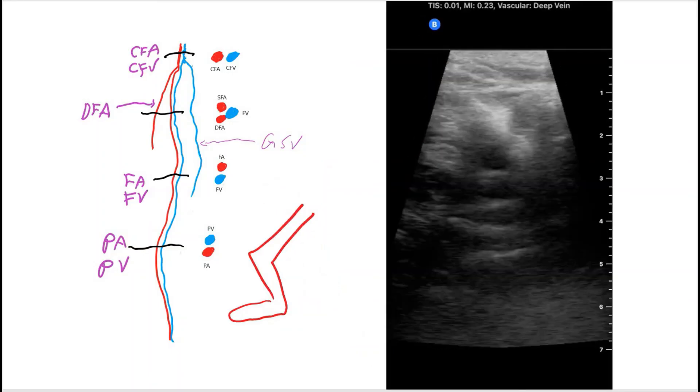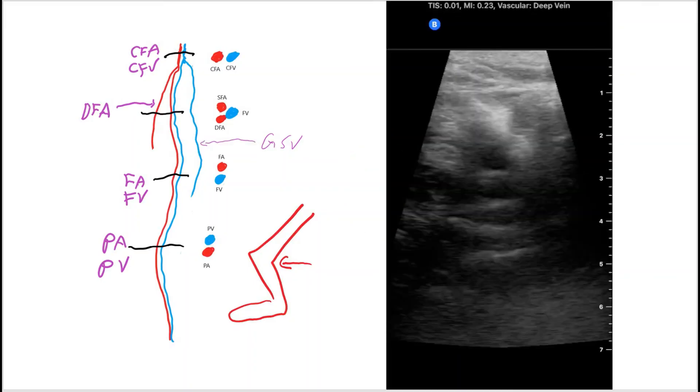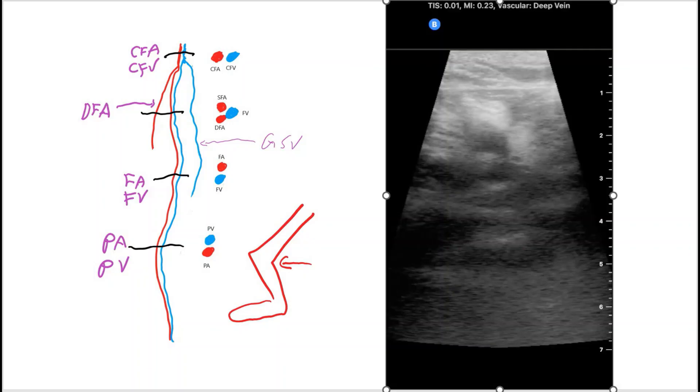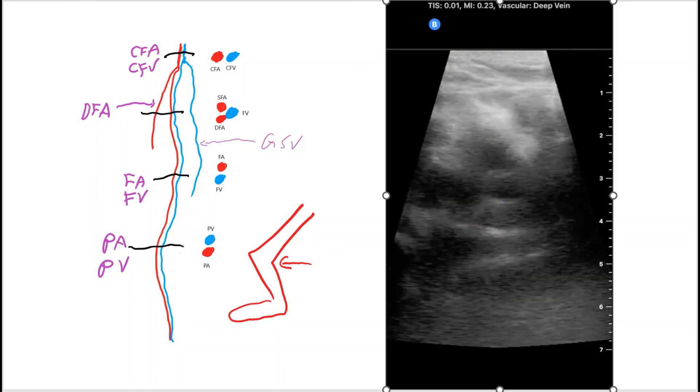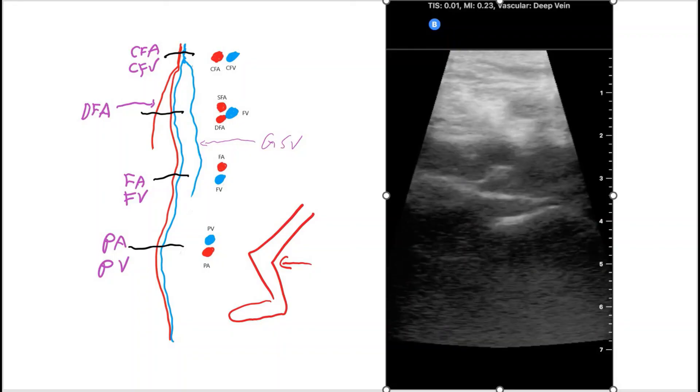To look at the popliteal vessels the ultrasound points behind the knee and the indicator now points to the patient's left. And the popliteal vein should be on top and the popliteal artery should be on the bottom of the screen. Here we will show you a video. So here you can see that the popliteal artery is pulsating on the bottom and the popliteal vein collapses when you compress.